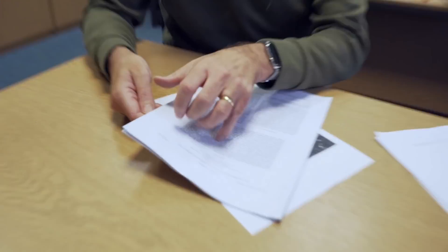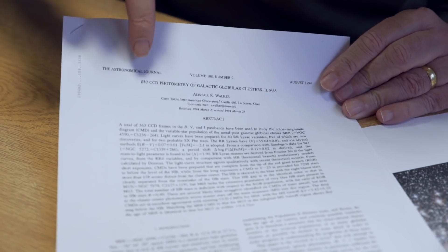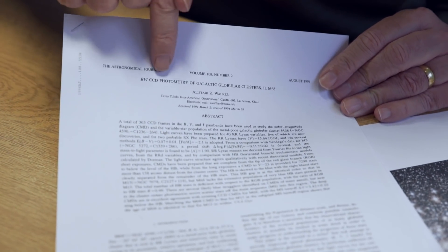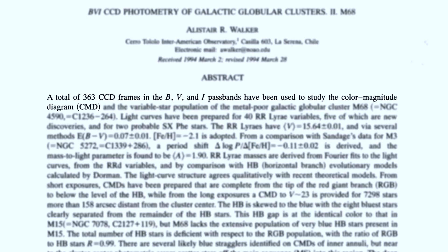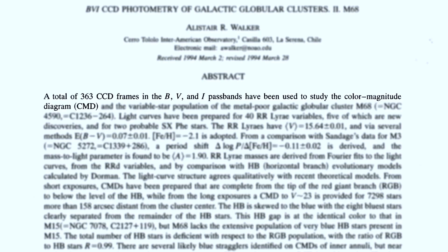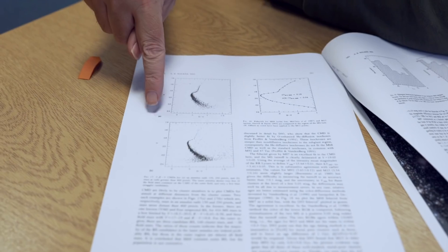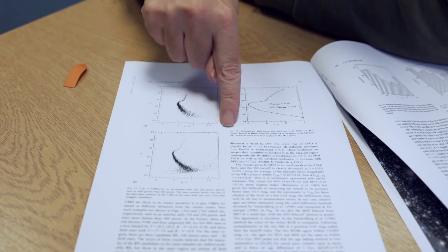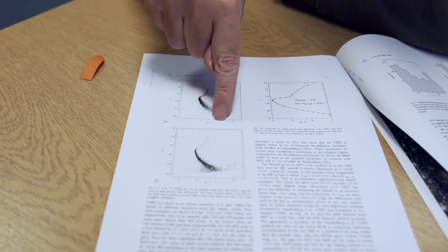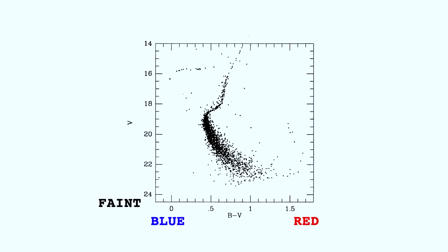Let me remind you of a little bit of the details of what you can learn by studying these things. This is a study of Messier 68 using CCD photometry — modern imaging from the 1990s — in blue, visual (green light), and eye (very red light). The classic thing that astronomers do, once they've made those measurements, is to make a colour magnitude diagram, where brightness in one band is plotted on one axis versus a colour — the difference between magnitudes in two bands. Bluish things are over here, reddish things over here, faint things at the bottom, bright things at the top.